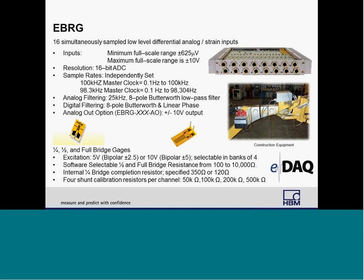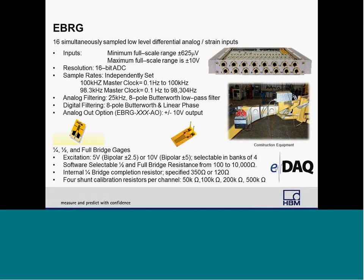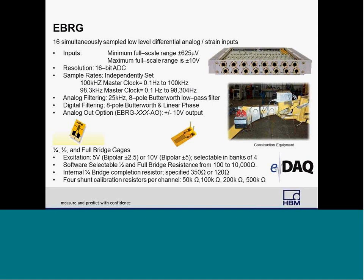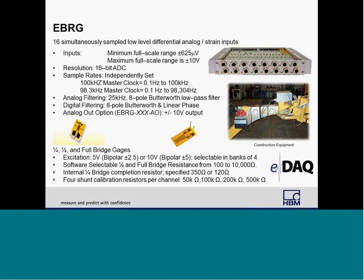It has bipolar excitation capable of 5 and 10 volts. The eBridge can also measure quarter-bridge, half-bridge, and full-bridge gauges. It has internal completion for quarter-bridge strain gauges of the 120 and 350-ohm variety, and four shunt calibrators per channel for 50, 100, 200, and 500-ohm shunts.